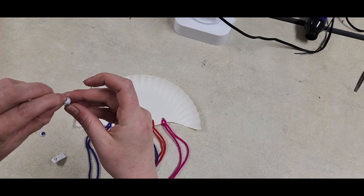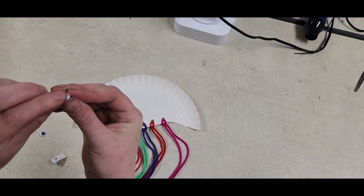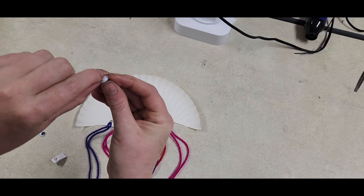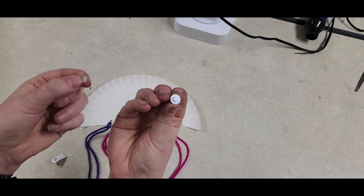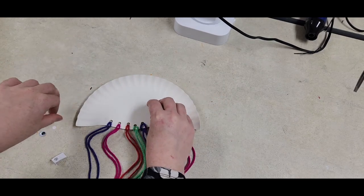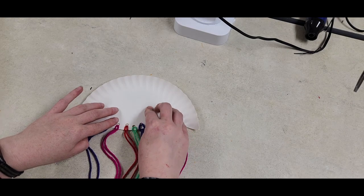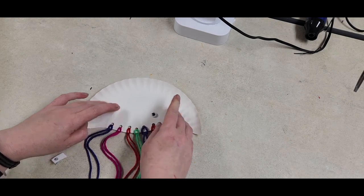We're going to stick that little dot right on the back of the eyeball, and then there's a piece of paper on this side as well that I'm going to peel off. I want the eyes kind of low but slightly spaced apart. So there's one.